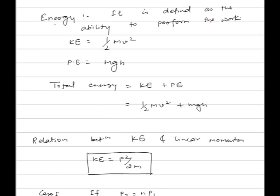Energy is defined as the ability to perform work. Basically, energy is of two types: one is kinetic energy, given by half mv², and another is potential energy, given by mgh. Total energy of a body is given by the sum of kinetic energy and potential energy, that is, half mv² plus mgh.